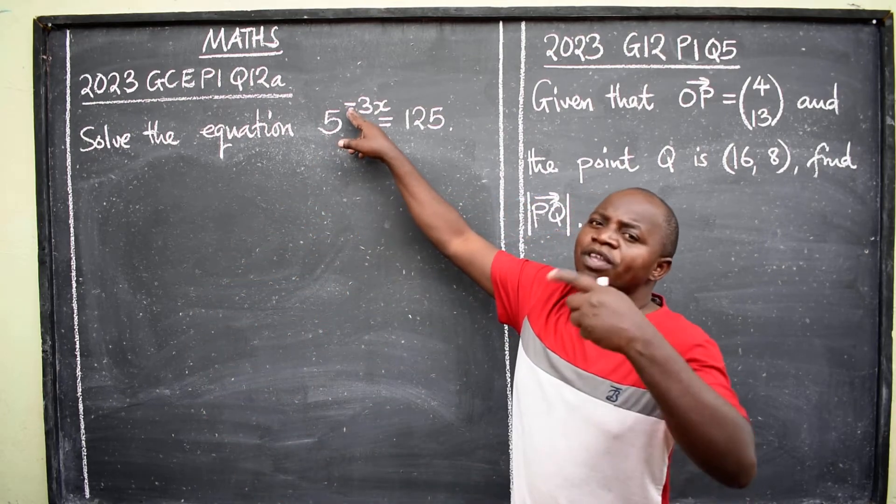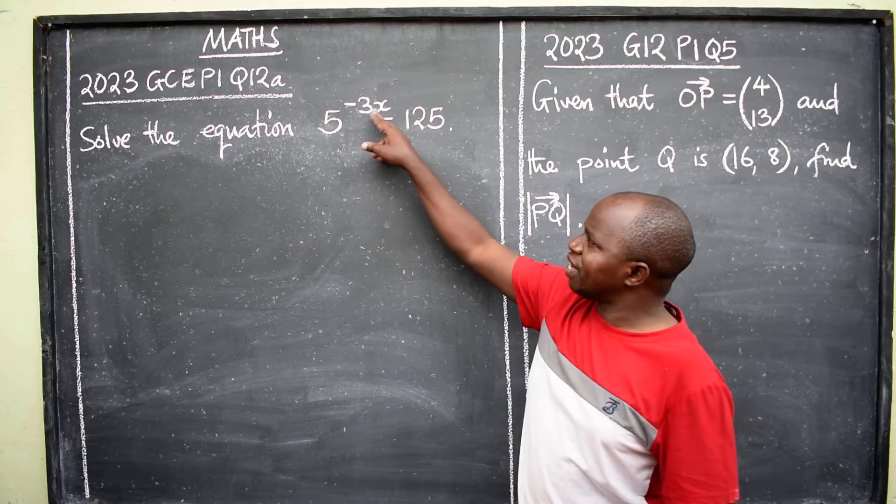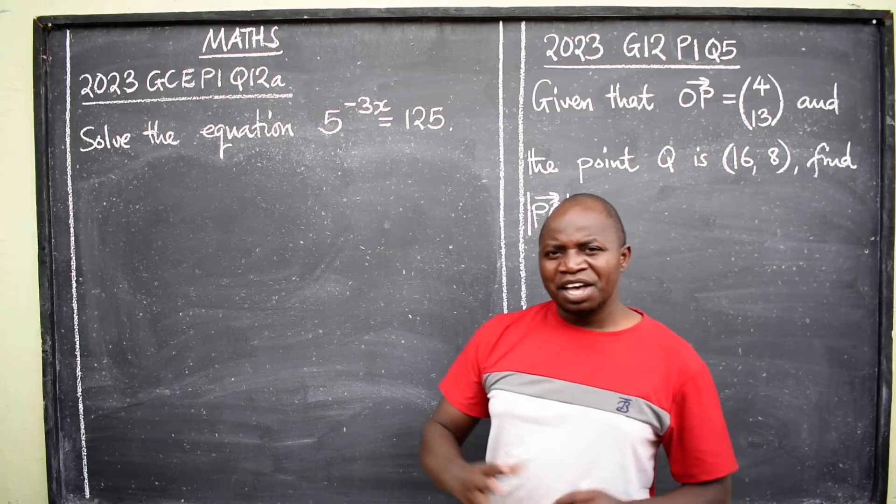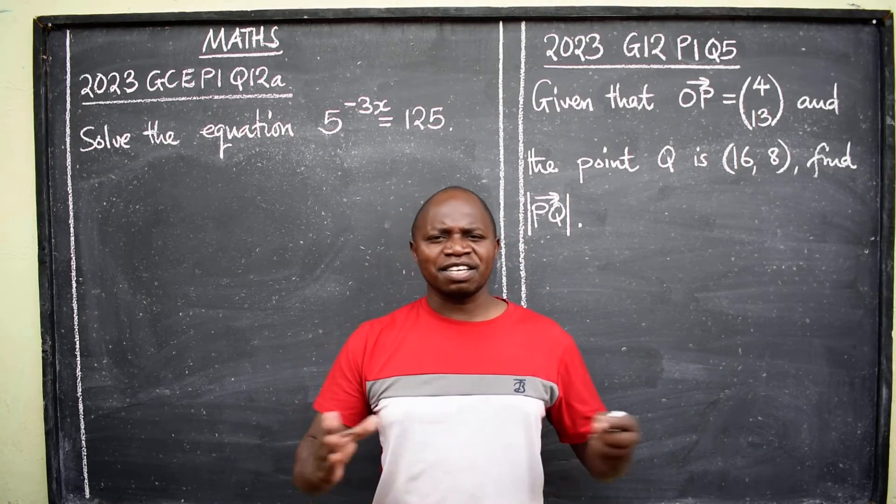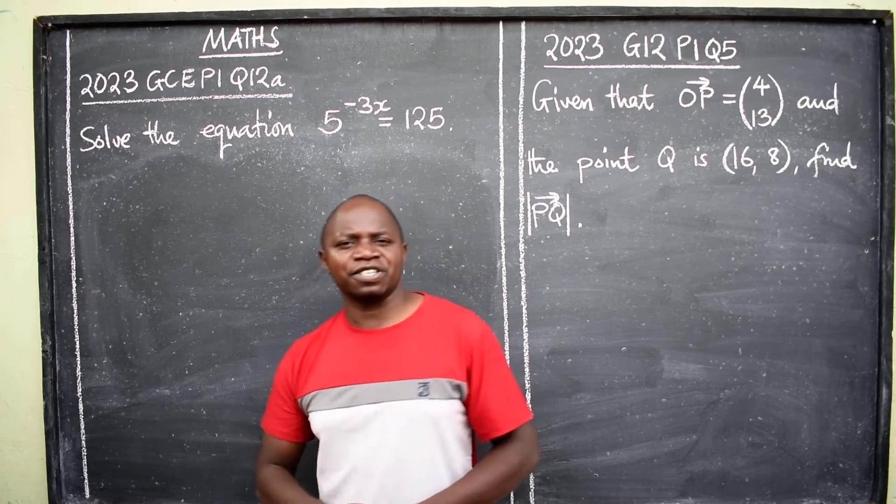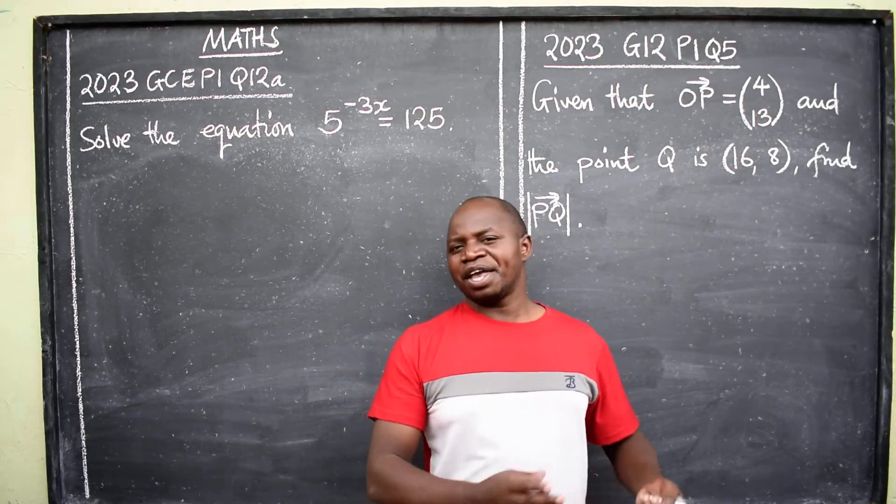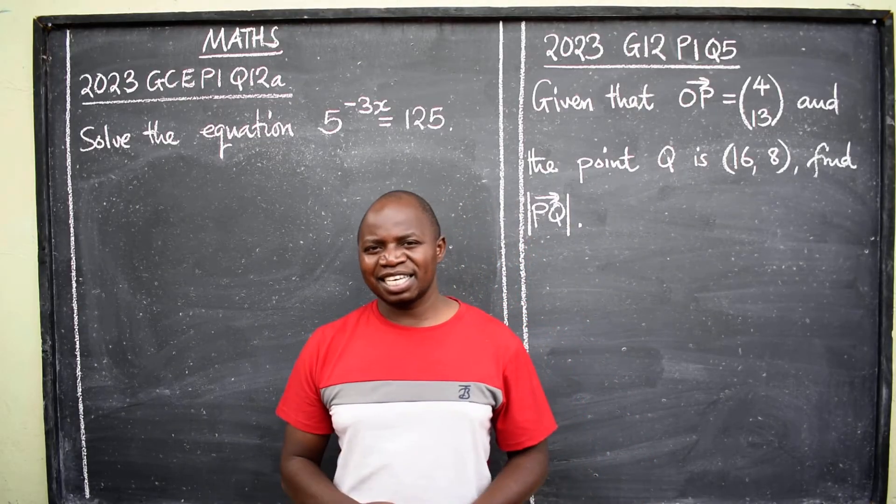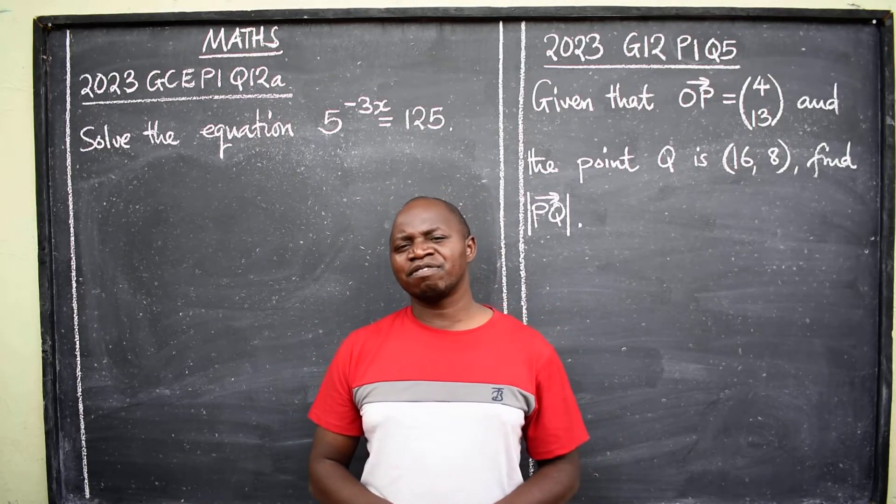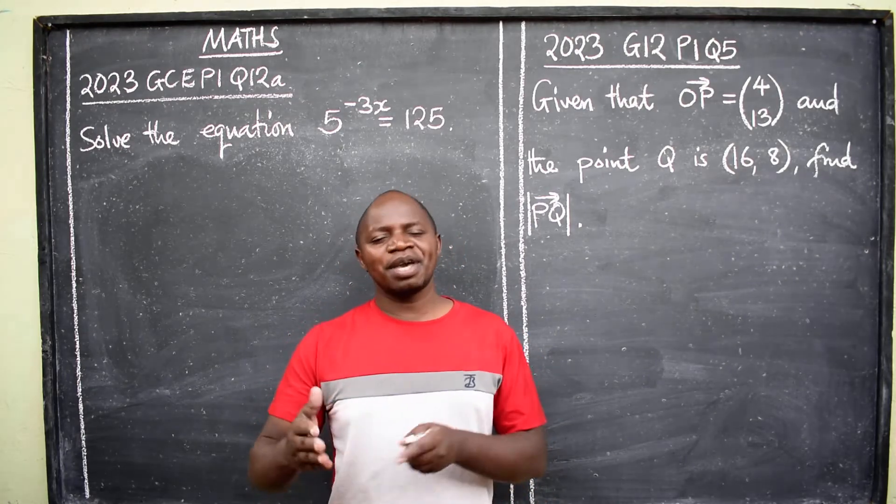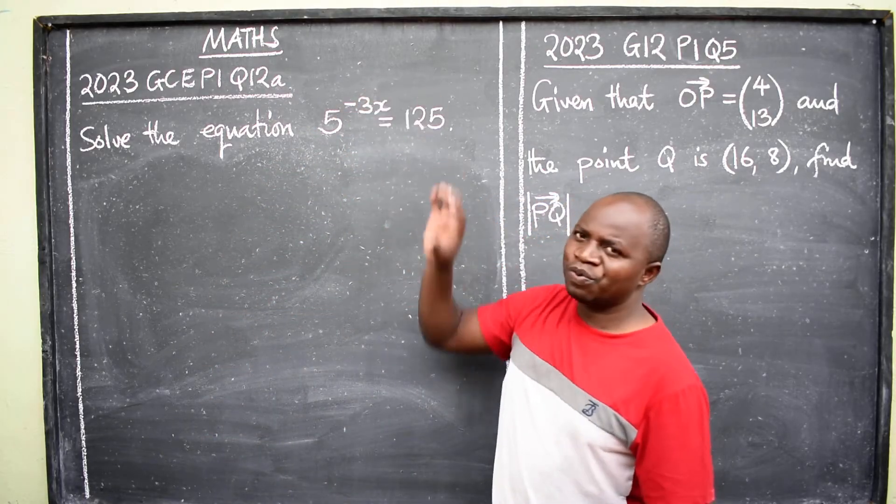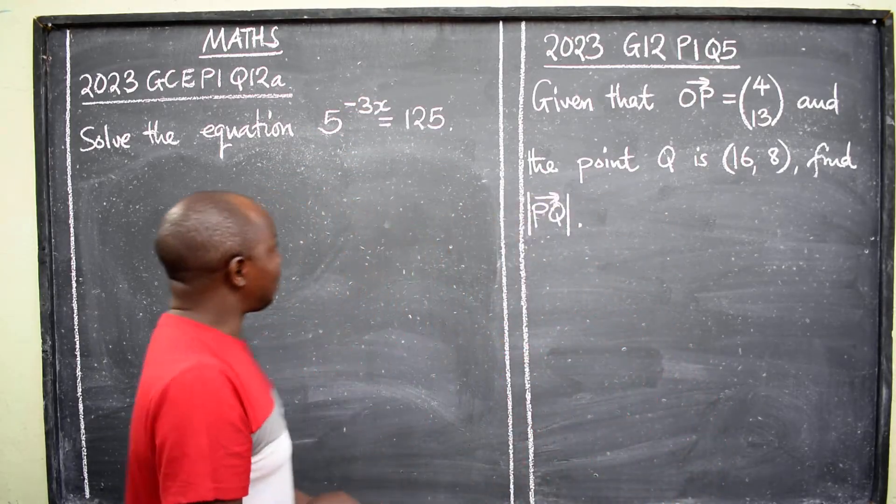5 to the power negative 3x is equal to 125. What type of equation is this? Remember ladies and gentlemen, we have different types of equations: linear equations, exponential equations, quadratic equations, cubic equations, trigonometric equations, and so many equations. Now which type is this?